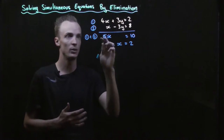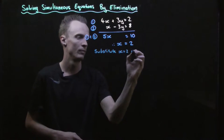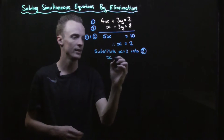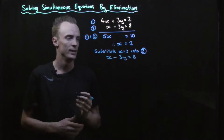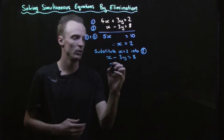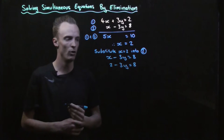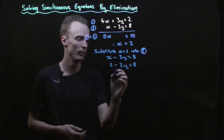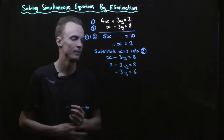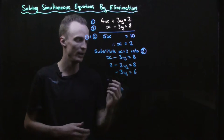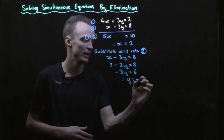To find the y value we need to substitute x equals 2 into one of these equations. I'm going to substitute x equals 2 into equation 2, which is x subtract 3y equals 8. So my x value will be 2: 2 subtract 3y equals 8. I subtract 2 from both sides, giving negative 3y equals 6. Dividing by negative 3 on both sides, my y value must be negative 2.